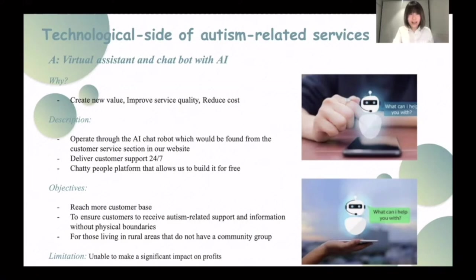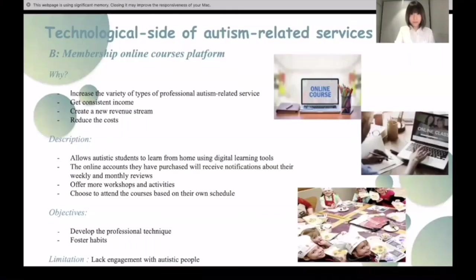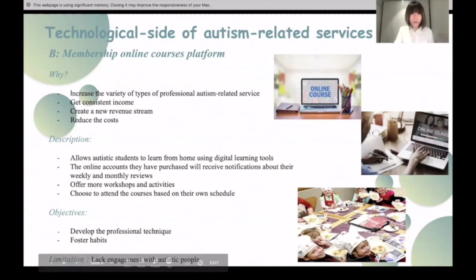Introducing online courses would help ACN increase the variety of professional autism-related services. A membership program is also an ideal way to generate consistent income and create a new value stream. This program allows autistic students to learn from home using digital tools, connecting them with professional staff. Members will receive notifications about weekly and monthly reviews. In addition, we plan to offer workshops and activities toward their interests, such as a cookie workshop, and they can choose courses based on their own schedules.